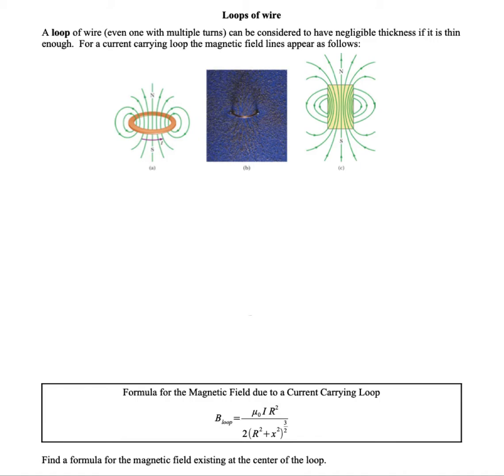One important application of magnetic fields is the magnetic field due to a current carrying loop. A loop is circular in shape and has a negligible thickness, so we often conceptualize it as being infinitely thin. The magnetic field due to a loop is shown in the images here. The loop will make magnetic field lines that cut right through the center and create a nearly uniform magnetic field in that region.